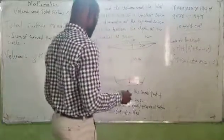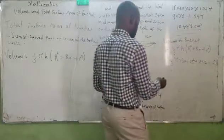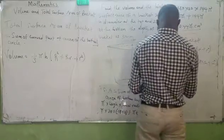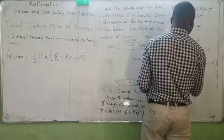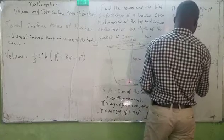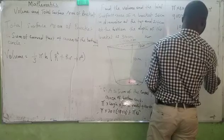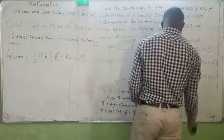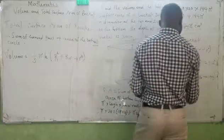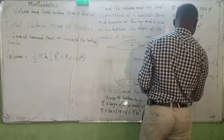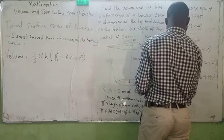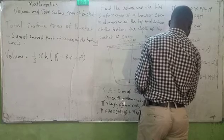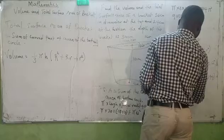By so doing, 18 squared will give me 10 pi bracket of 324 plus 216 plus 144. This will give me 684 multiplied by 10 pi, which I will be having 6840 pi centimeter cubed. That is just it.